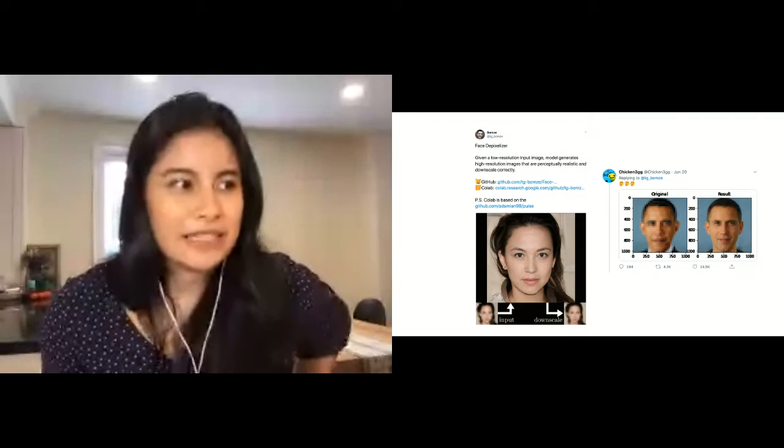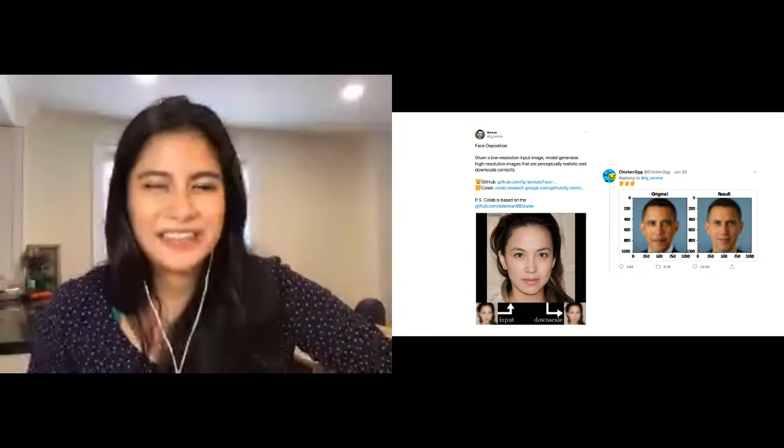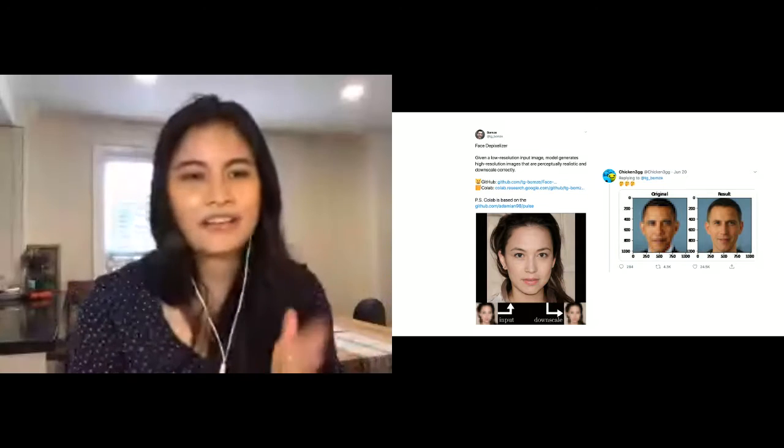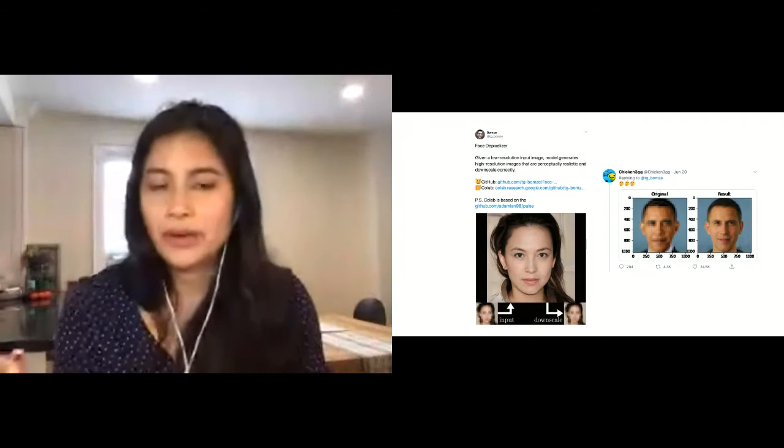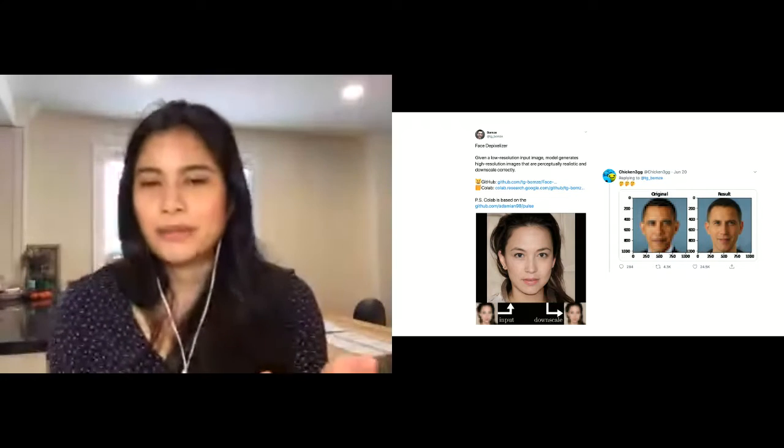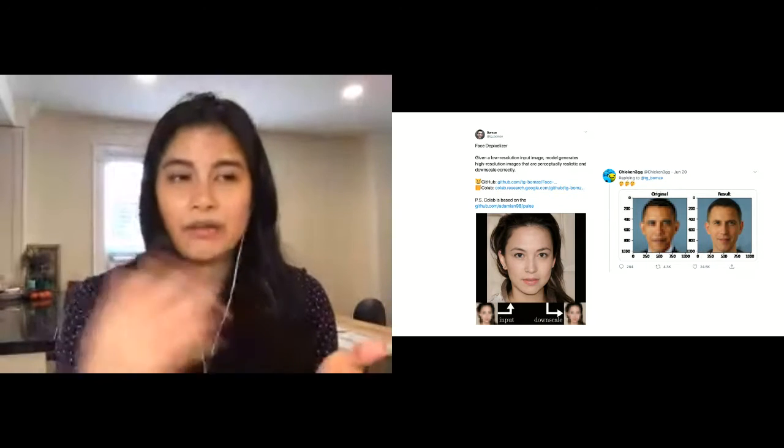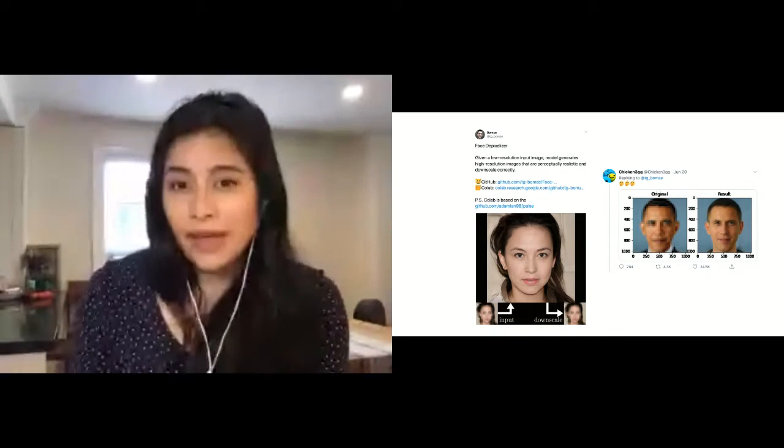The last example I'll share in this section—this was going around Twitter about a month ago—was the face depixelizer. The animated gif isn't working right now, that's okay, but you would give the algorithm a low-res image and then it would output a high-res image. People quickly found out that if you gave it an image of a person of color, it would output a white person. There's an example of Obama there, and this is problematic.